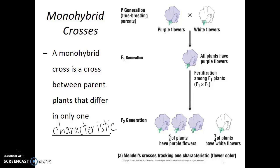Gregor Mendel performed this cross many times and consistently saw that the F1 generation would all have purple flowers. But then if he allowed those F1 plants to self-fertilize and planted the next generation — the F2 generation — most of them would have purple flowers, but consistently white-flowered pea plants would show up again. In fact, white-flowered plants would consistently show up in about one quarter of the F2 offspring. This was a pattern Gregor Mendel saw repeated many times.